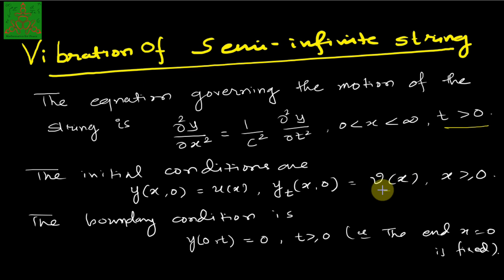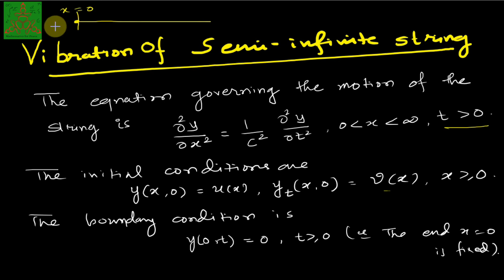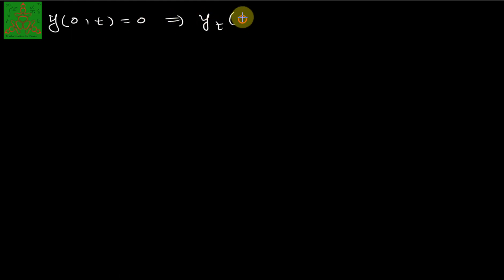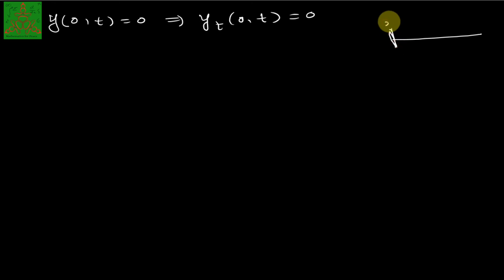There is another condition called the boundary condition. Since we are fixing one end at x equal to 0, the boundary condition states that when x equal to 0, the displacement is 0. So at x equal to 0, the value of y is 0. This boundary condition also implies that the velocity at x equal to 0 is 0: y of 0,t equal to 0 implies y_t of 0,t is also 0.